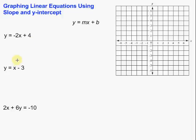Let's take a look at this first one. If we can pick out the m and the b — in other words the slope and the y-intercept — we can then use those in order to graph our equation. The m is the slope and the b is the y-intercept. With those two things, we can graph these linear equations.